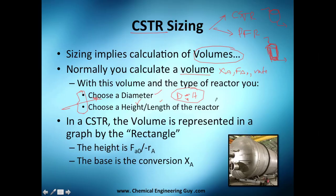For the continuous stirred tank reactor, the volume is represented in a graph by a rectangle. You plot conversion versus rate of reaction multiplied by flow. The area of this rectangle in the graph is my volume. The height I'm talking about is the flow of A at the beginning divided by the rate of reaction at that conversion, and the base is the conversion XA.